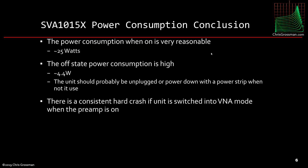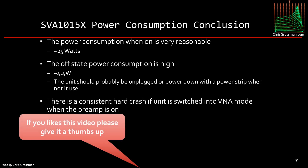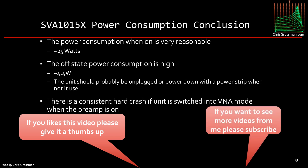So here's the conclusion. The power consumption when it's on is very reasonable, about 25 watts. The off-state power consumption is very high at 4.4 watts — the unit should probably be unplugged or powered down with a power strip when not in use. And there's a consistent hard crash mode when you switch to VNA mode when the preamp is turned on. If you like this video, please give it a thumbs up, and if you'd like to see more videos, please consider subscribing. Thank you very much.